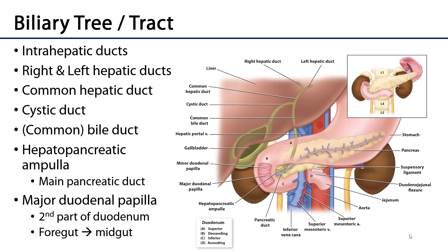The biliary tree, also known as the biliary tract, is the entirety of the pathways between the bile canaliculi of the liver, which feed into various intrahepatic ducts, the gallbladder and its cystic duct, and all of the pathways down to the major duodenal papilla of the second part of the duodenum.